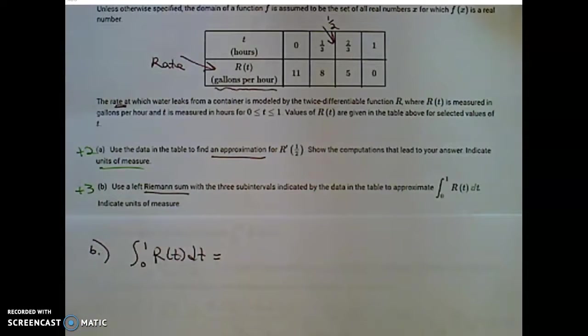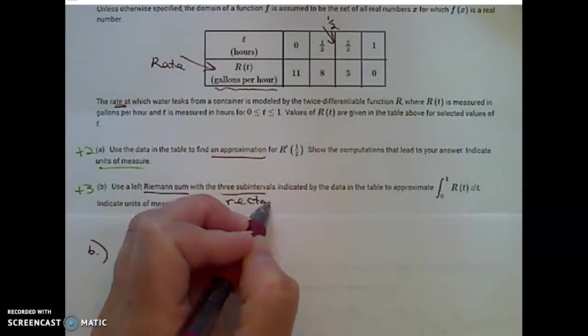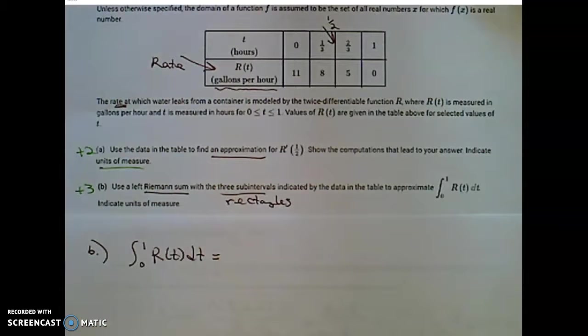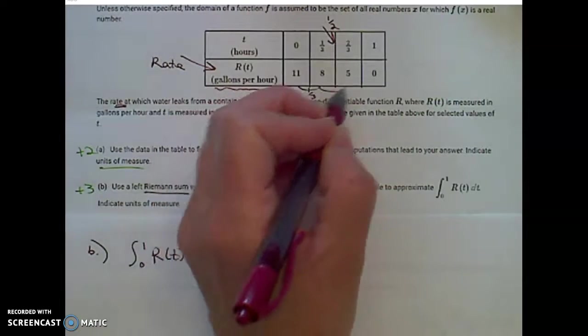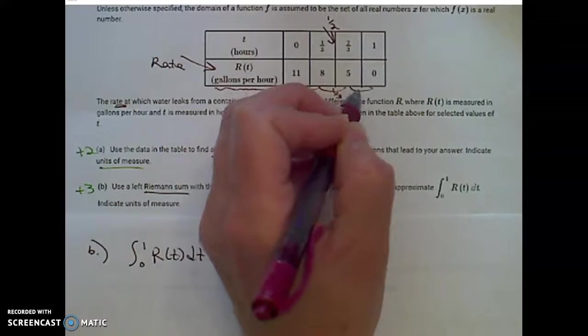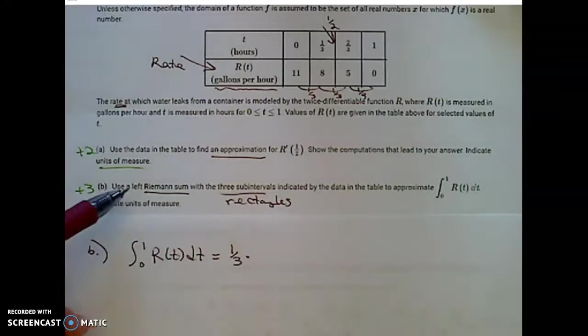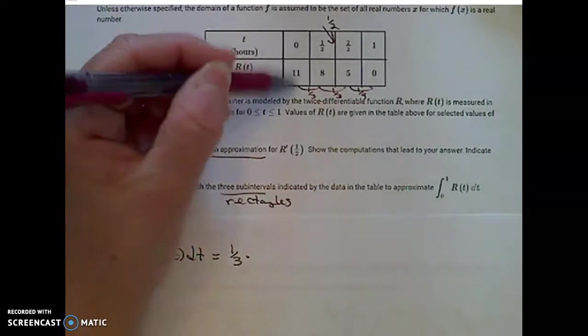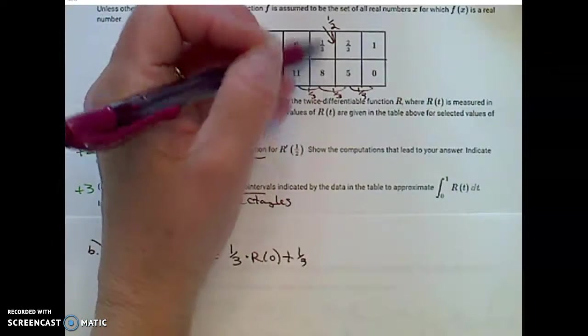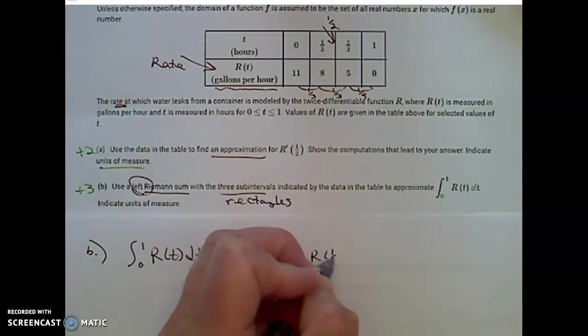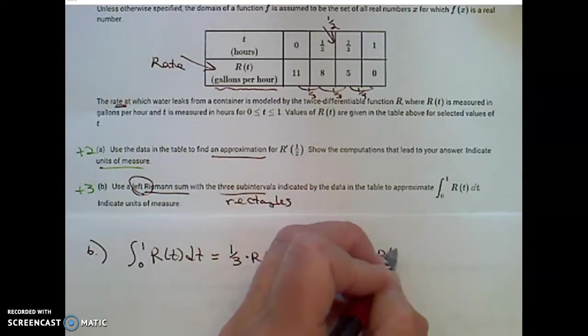So I want rectangles. I'm going to approximate the area under the curve with 3 rectangles. The areas of those rectangles are base times height. The base of each of those rectangles will be this width, which is 1 third, 1 third, and 1 third. So 1 third base times height. Since it's a left Riemann sum, I'm going to start on the left. So I need that R of 0. So R of 0 plus base times height, height on the left, which is R of 1 third, plus base times height will be that function value R of 2 thirds.